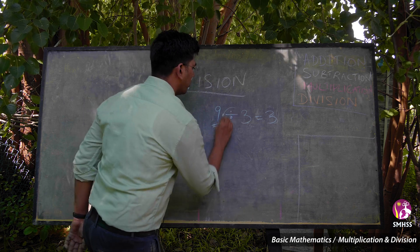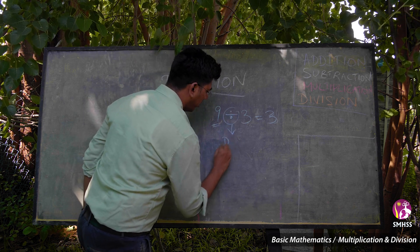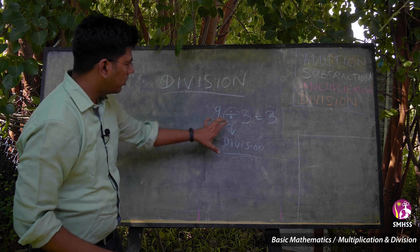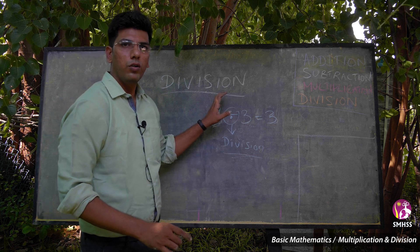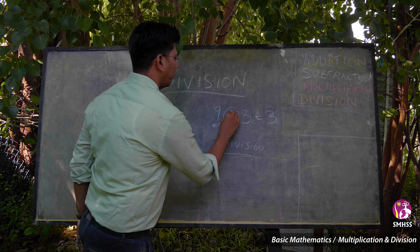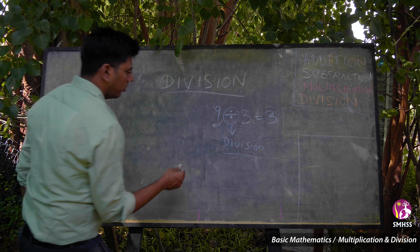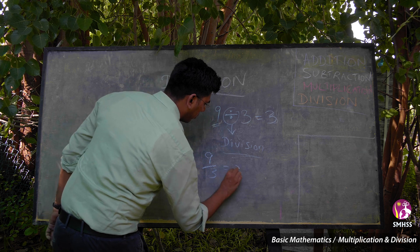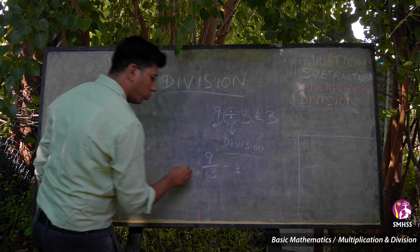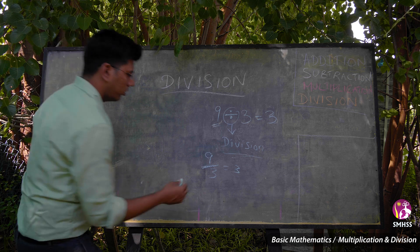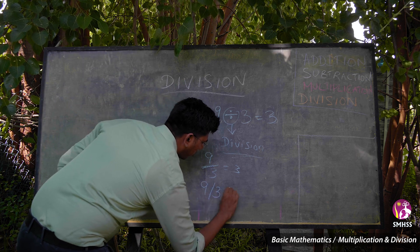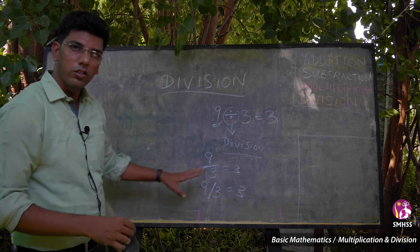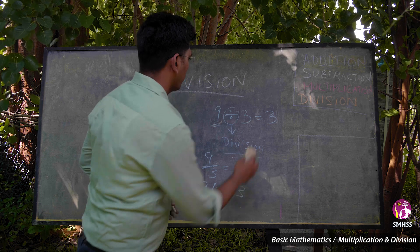This is called the division symbol. You will see this symbol early on. But later in further subjects, you can see it written like 9 by 3 equals 3 — this is also a division symbol. Sometimes it will look like a slash — that is also a division symbol.